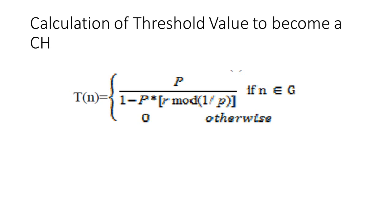The threshold value, in turn, is calculated based on an equation that incorporates the desired percentage to become a cluster head, the current round, and the set of sensor nodes that have not been selected as cluster heads in the last 1 by P rounds denoted by G. As a result, T is given by the formula shown in the diagram.